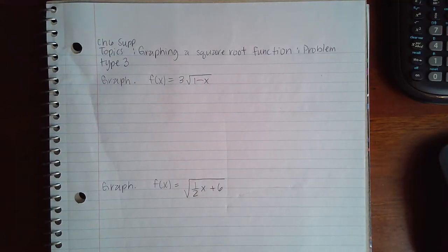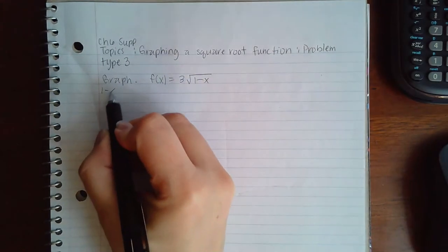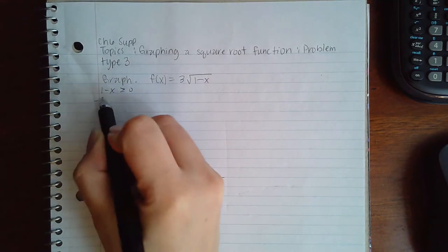Here we have graphing a square root function problem type 3. Similarly, we're going to do the same thing. Set what's inside the radical greater than or equal to 0 and solve.